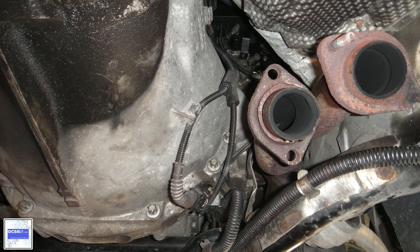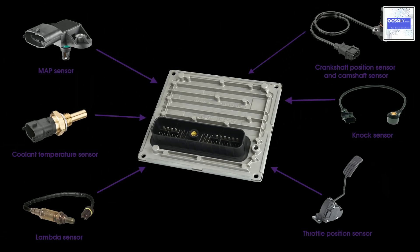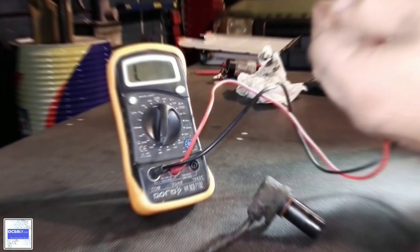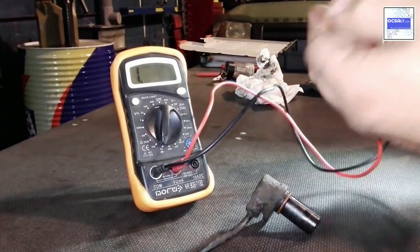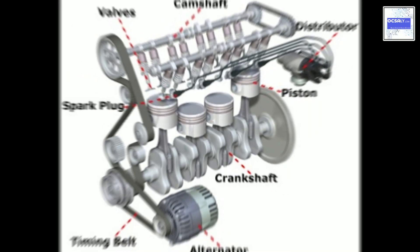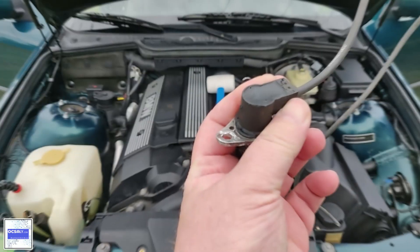The most common OBD2 code related to the crankshaft position sensor is P0335 Crankshaft Position Sensor A circuit. In some cases, for example in Mercedes-Benz, Nissan, Chevy, Hyundai, Kia, this code is often caused by a failed sensor itself.